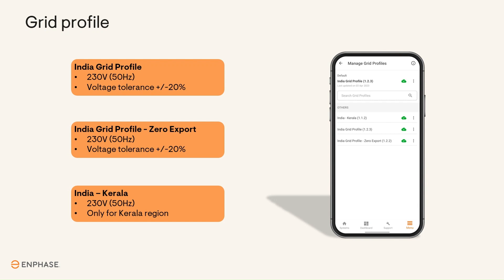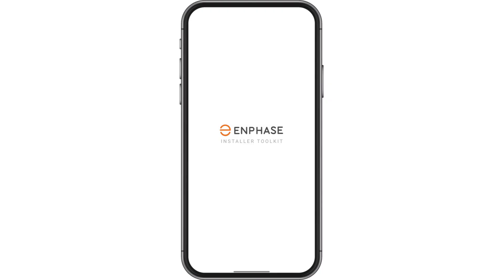You can change the grid profile remotely from anywhere by using the Enphase Installer app. For this, the IQ Gateway needs to be connected with a working internet connection. For changing the grid profile, open the Enphase Installer app.